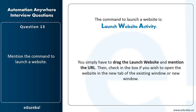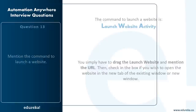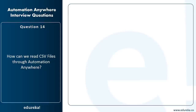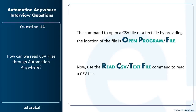How do you read CSV files in Automation Anywhere? To read a CSV file, first open the file by providing its file location in the Open File activity, then use the Read CSV File or text file command to read the CSV file.